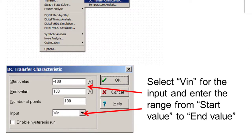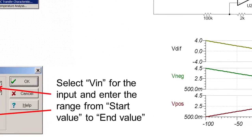In the DC transfer characteristics window, set VN as the input. Enter the voltage range of negative 100 volts to positive 100 volts for the start value and end value. Press OK and you will get the graph shown at the right.